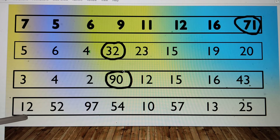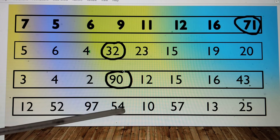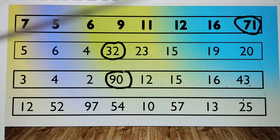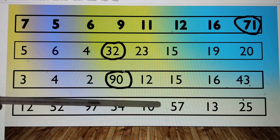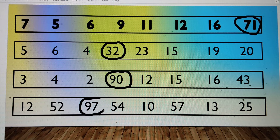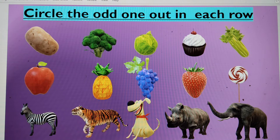Now let's read this series: number 12, number 52, number 97, number 54, number 10, number 57, number 13, number 25. There are numbers which are double digits, but we have to look for numbers starting with the biggest digit. There is a number starting with 9, so that is the biggest number here. We have circled them out. Now let's move to the next activity.